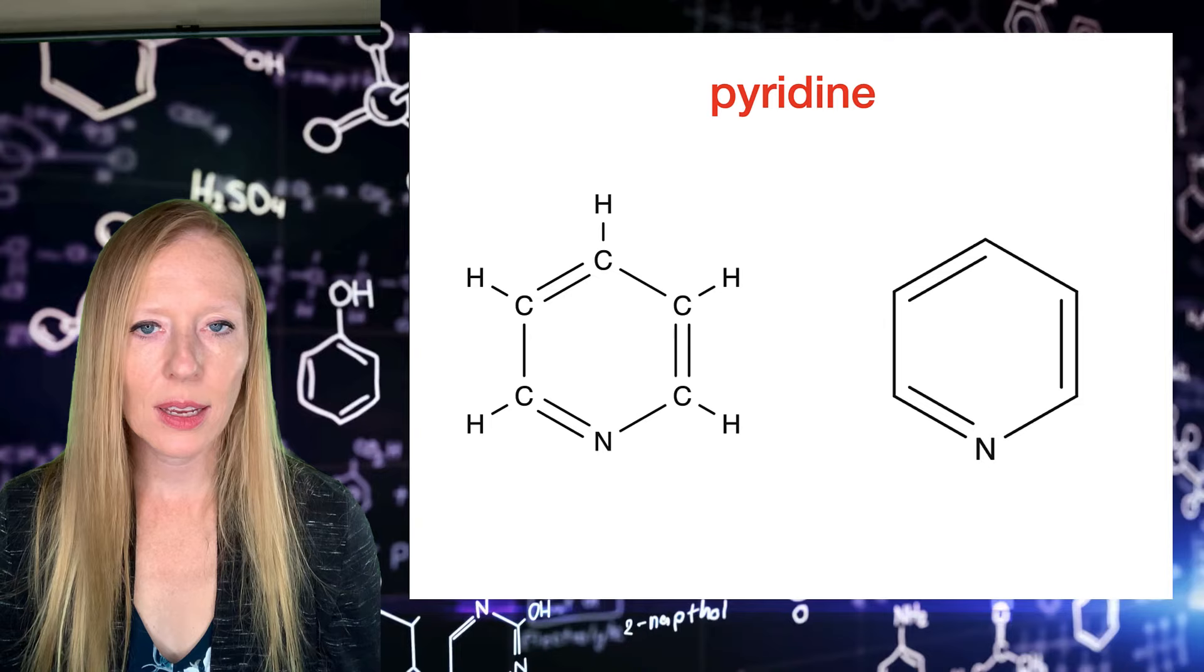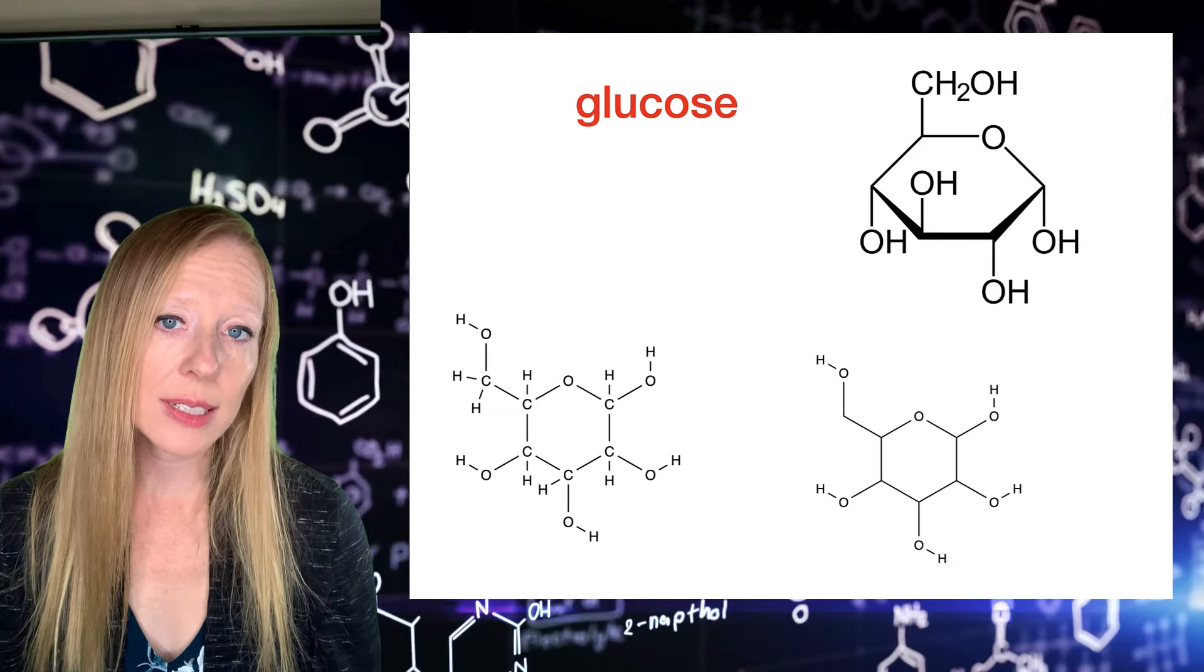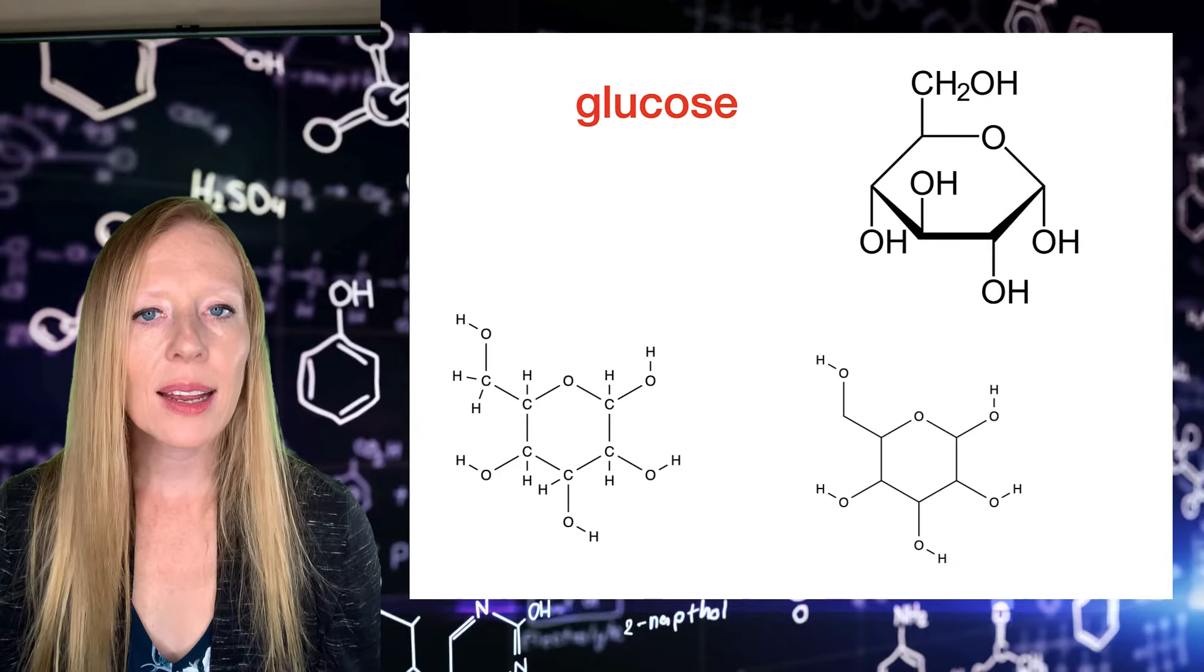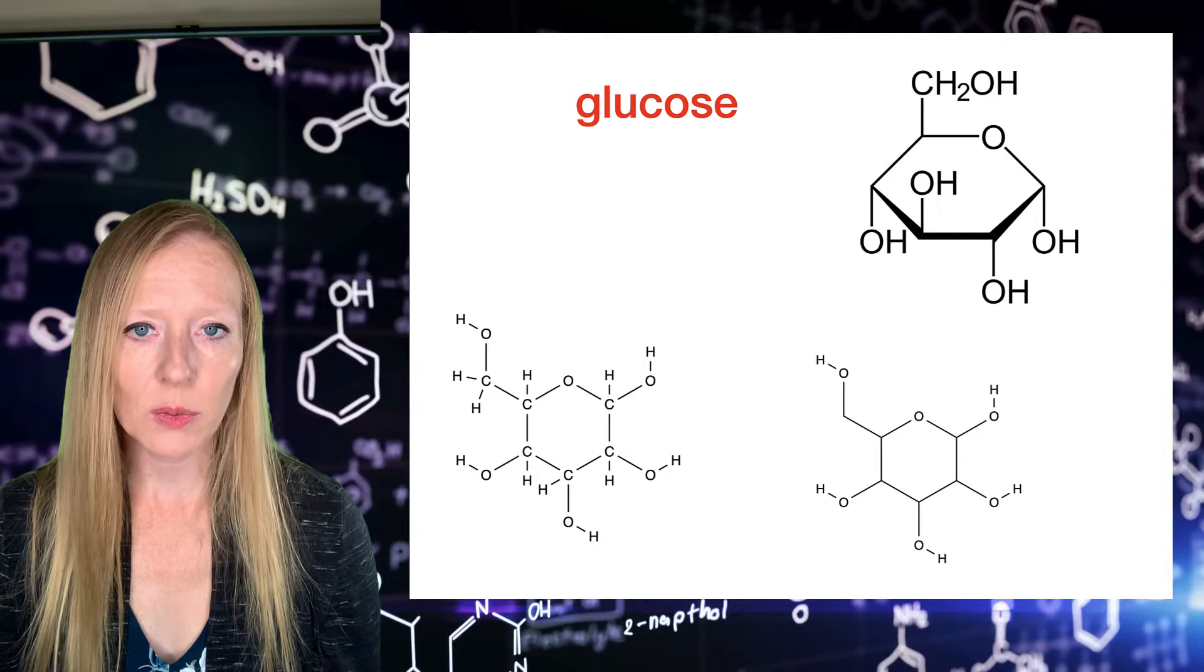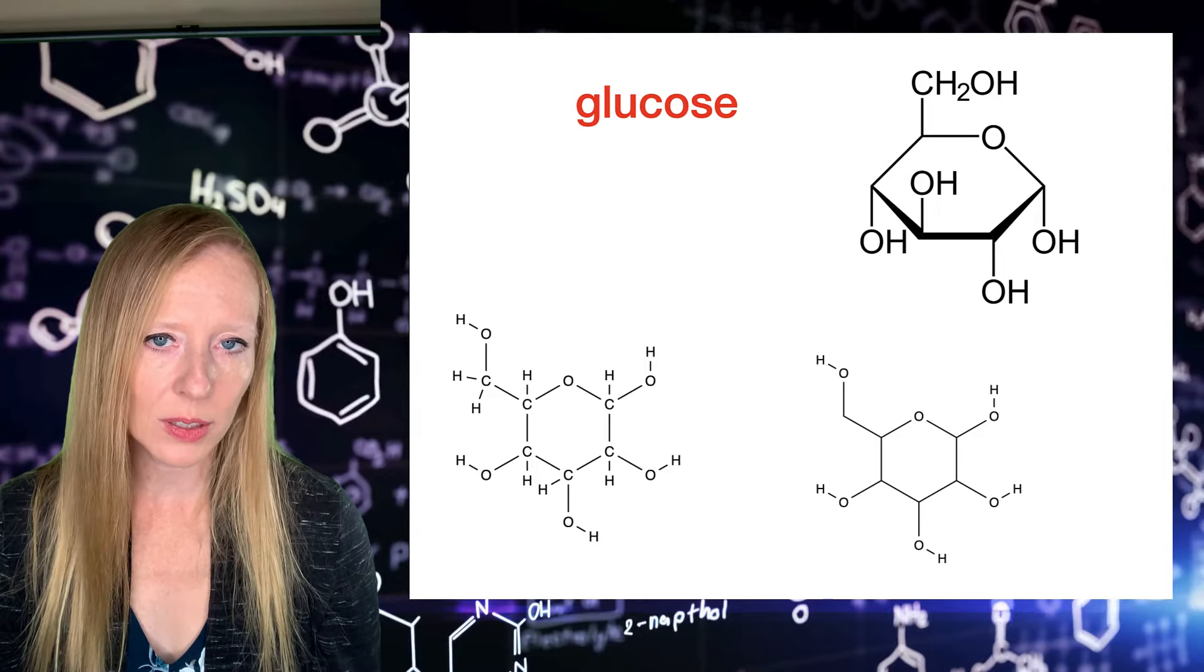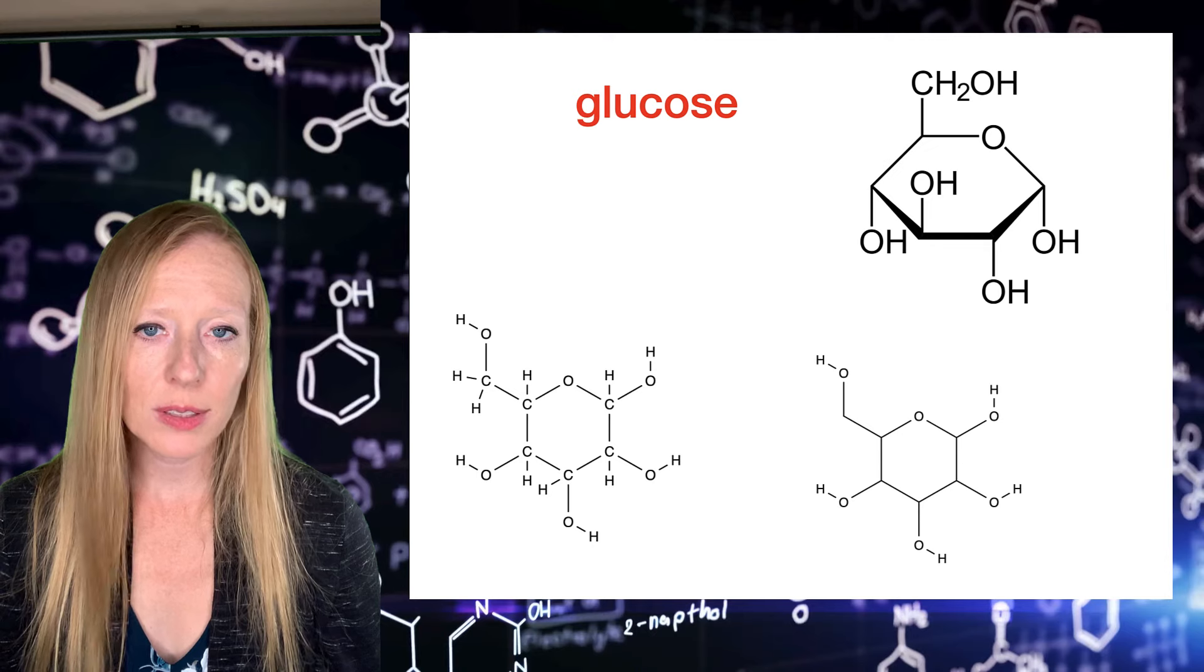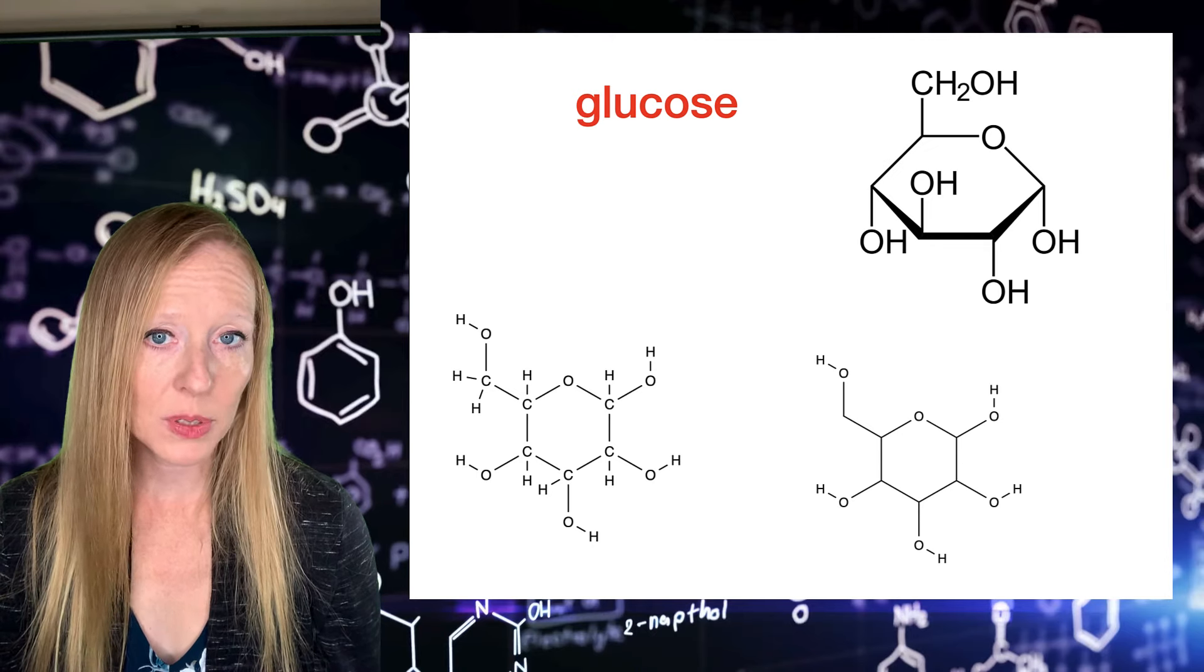Ring structures are found in things like simple sugars. For example, here's glucose. And you can see that essentially this is a ring of carbons with an oxygen as part of the ring structure. And we have also added these hydroxyl groups. Remember those?